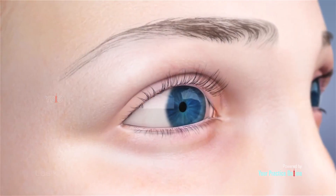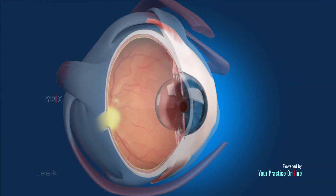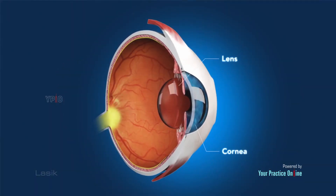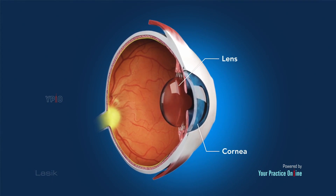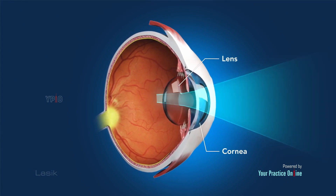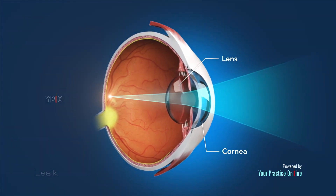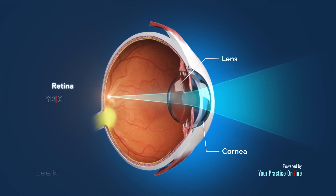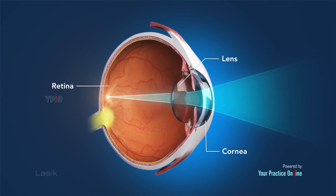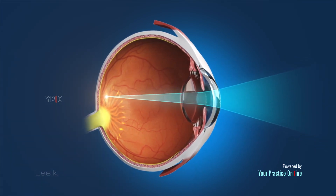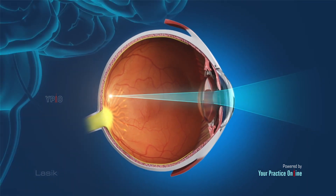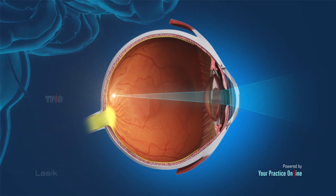The eye is made up of a clear dome-shaped structure called the cornea and an underlying lens which focuses light rays onto a light-sensitive layer of tissue at the back of the eye called the retina. The retina converts these light rays into electrical signals and sends them to the brain for processing.